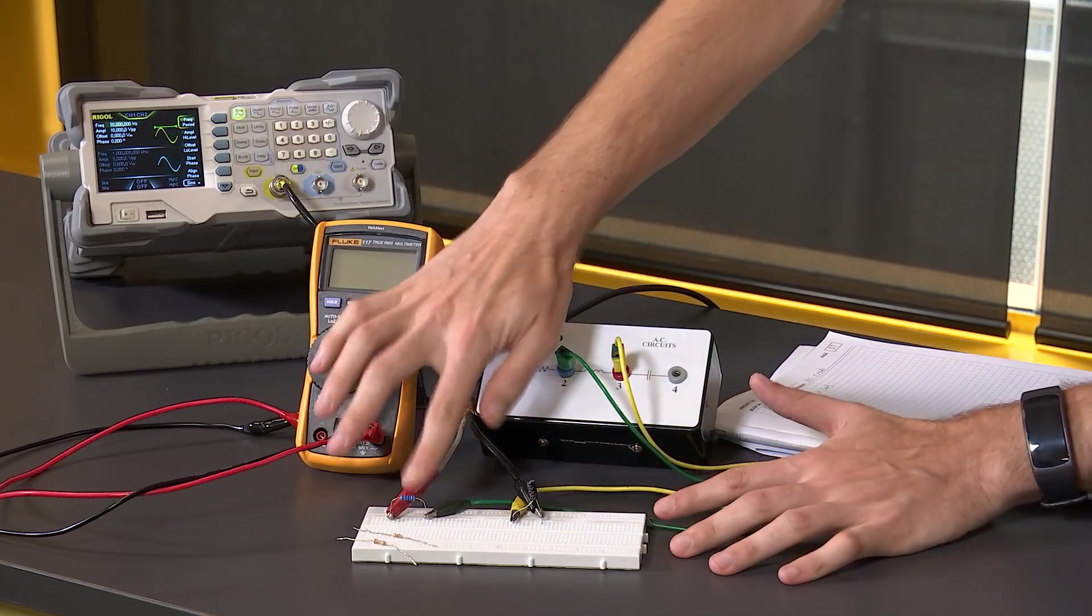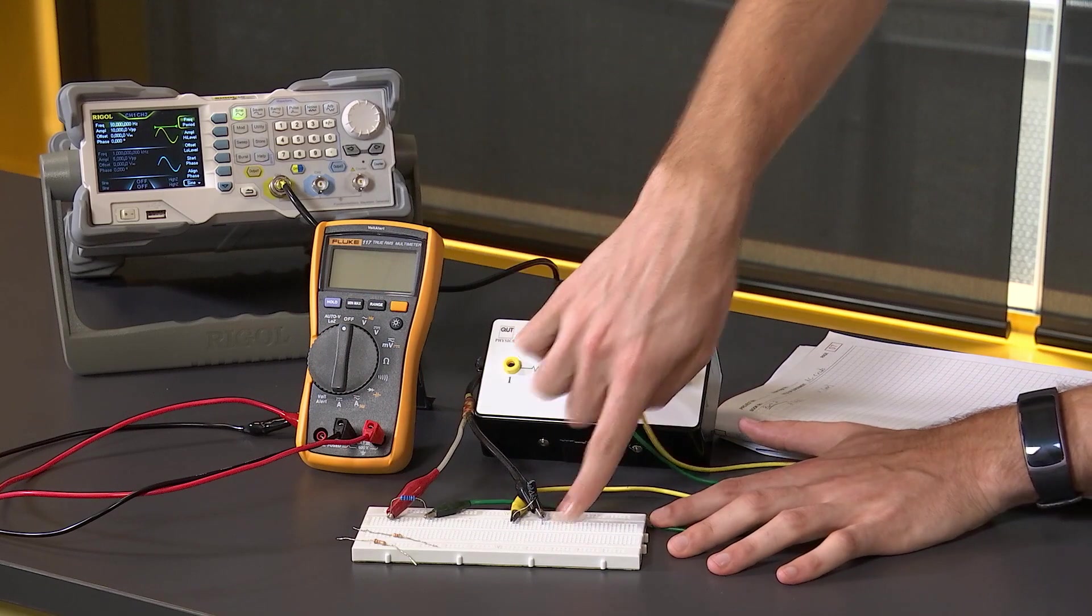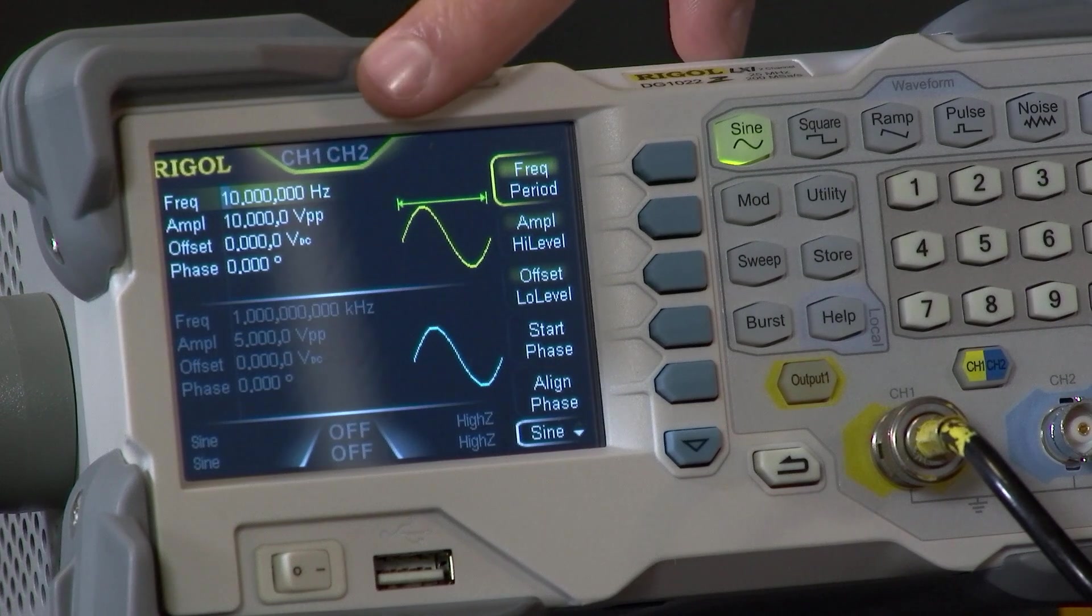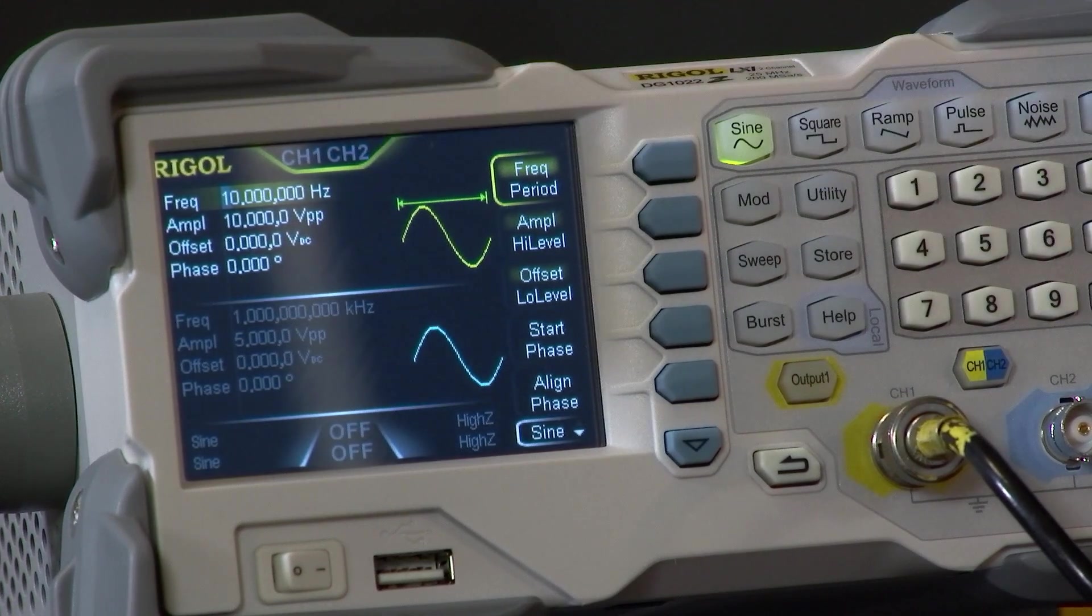So here we have our RLC series circuit and our power supply, which I've initially set to 10 Hertz sinusoidal wave with an amplitude of 10 volts peak to peak.